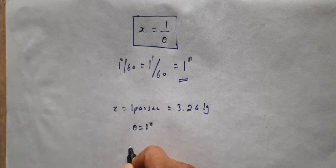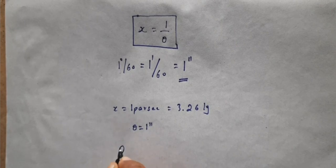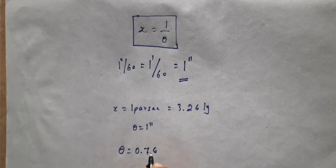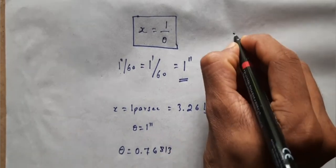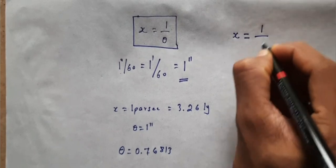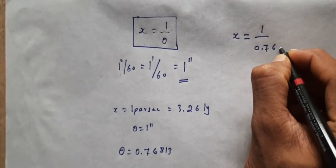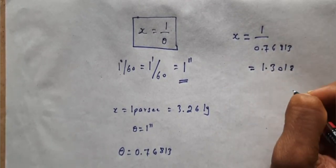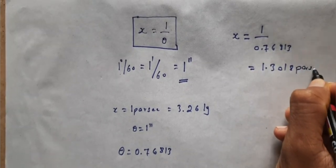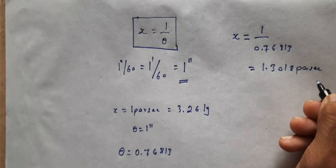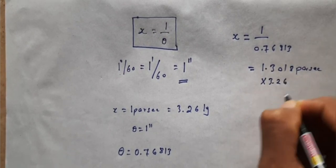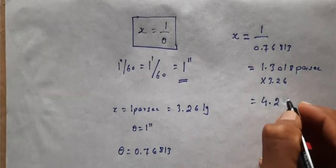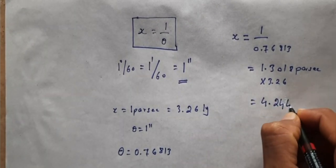For the nearest star Proxima Centauri, the parallax angle is 0.76813 arc seconds. If I substitute here, x is equal to 1 by 0.76813 arc seconds, which equals 1.302 parsecs. To write it in terms of light-years, I have to multiply with 3.26. I get 4.24 light-years.